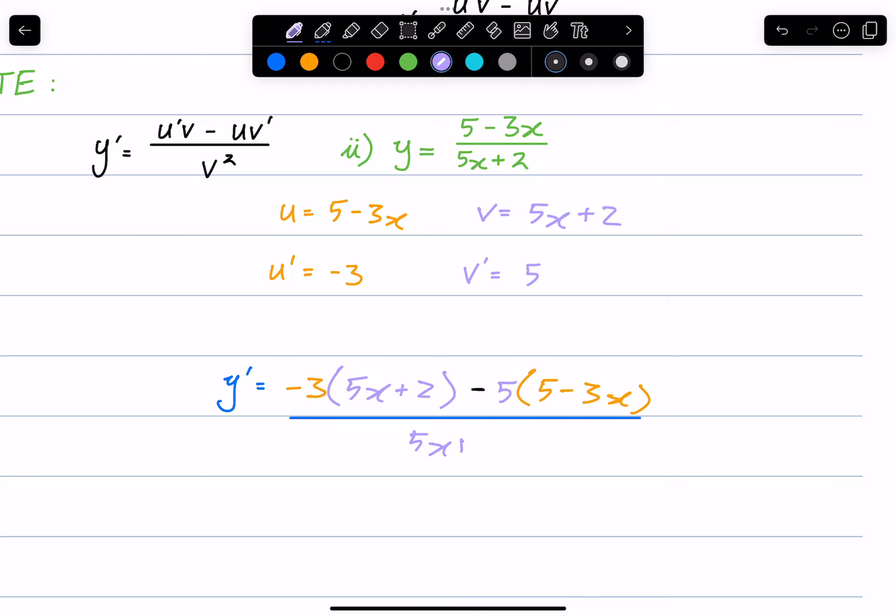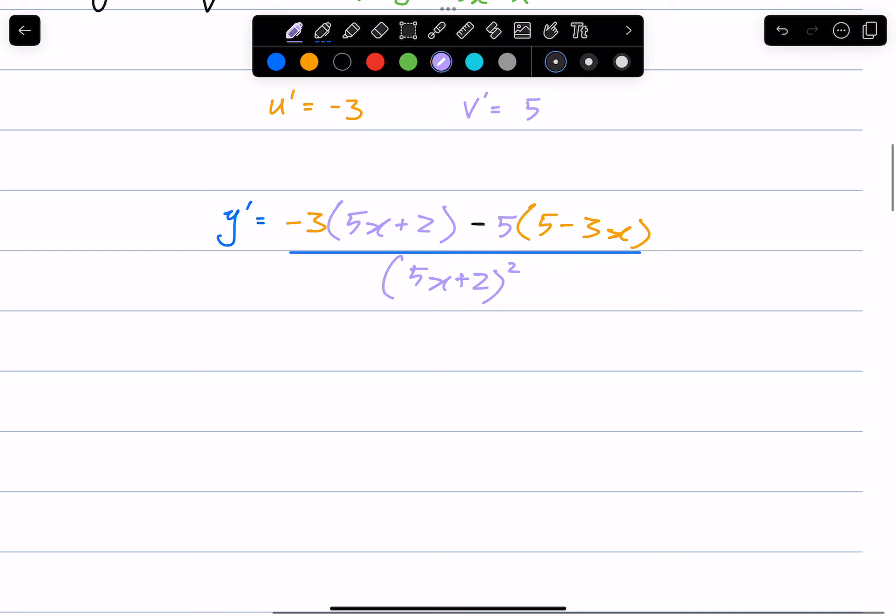(5x + 2)² all squared. We can simplify the numerator. This gives us -15x - 6. -3 times 5 is -15. -5 times 5 is -25. -5 times -3 is +15x, all over (5x + 2)².